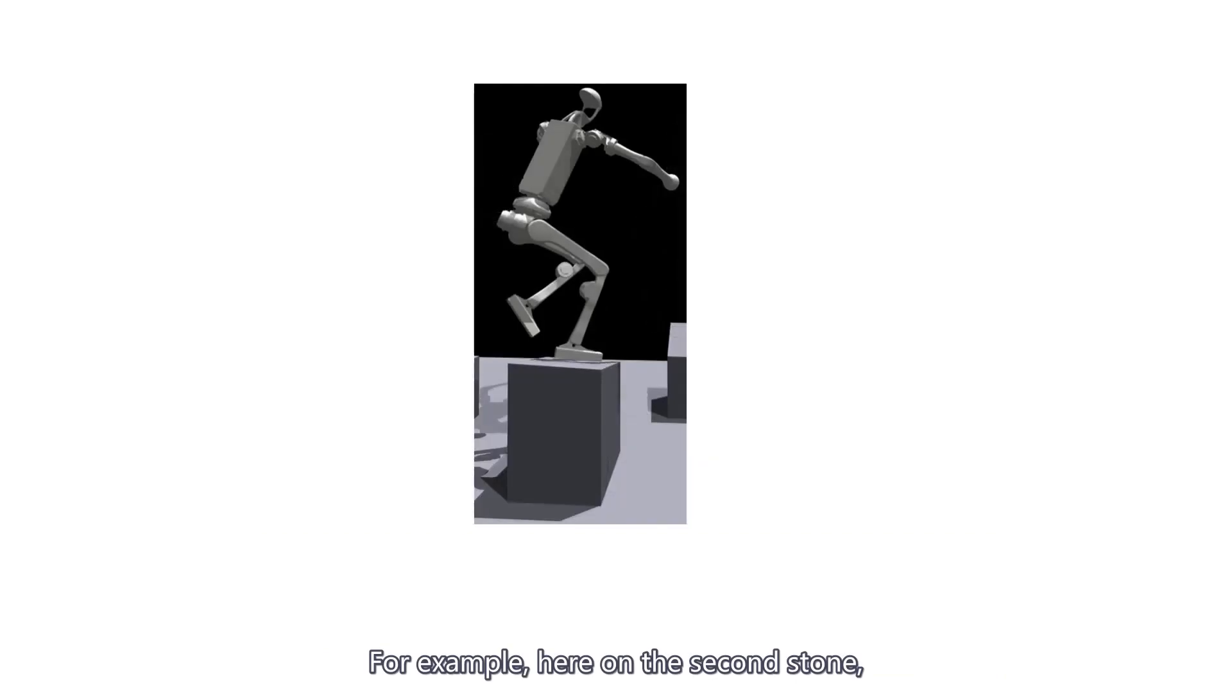For example, here on the second stone, the humanoid is commanded to have the right foot on the stone with the left foot in the air, while maintaining the upper body posture.